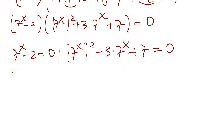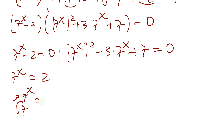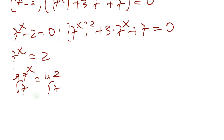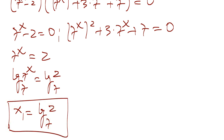So now, 7 to the x minus 2 equals 0, and 7 to the x squared plus 3 times 7 to the x plus 7 equals 0 as well. From the first equation, applying log base 7 on both sides: 7 to the x equals 2, so x₁ equals log base 7 of 2. That's our first solution.